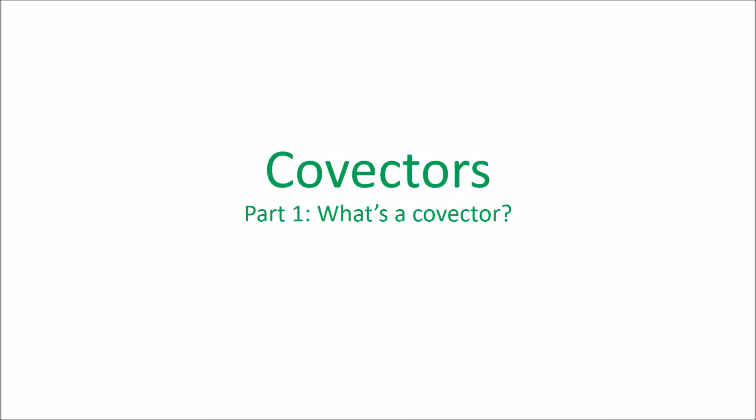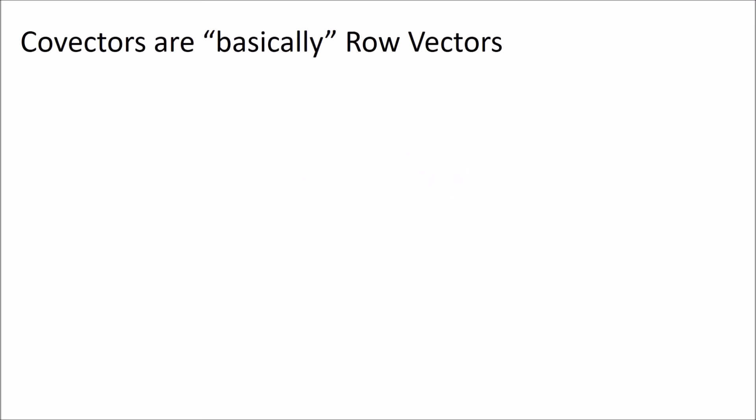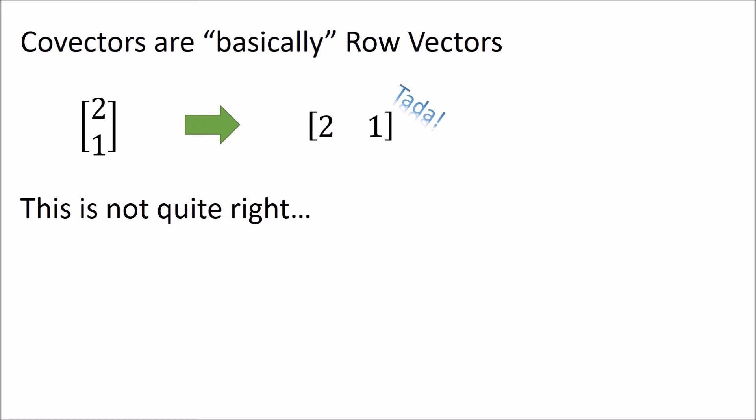So the first thing we're going to do is answer the question: what is a co-vector? As a starting point we can think of co-vectors as basically like being row vectors. You might think a row vector is just like a column vector that we take and flip on its side. Well, it's not quite that simple. Column vectors and row vectors are fundamentally different types of objects.